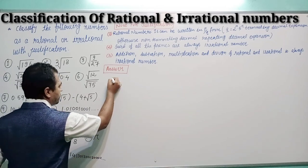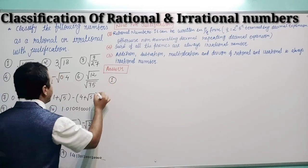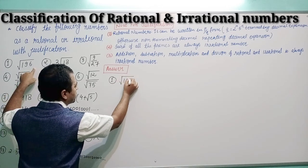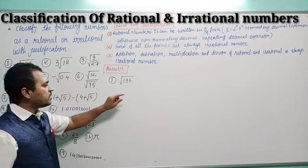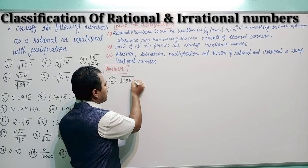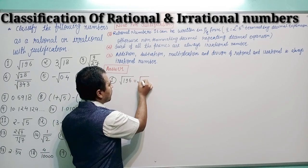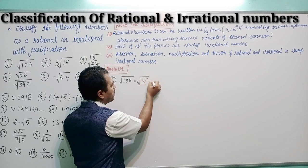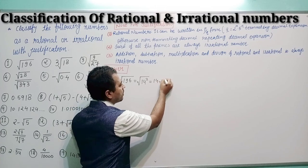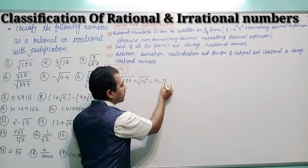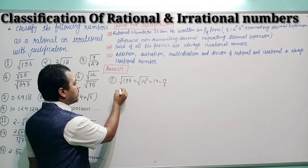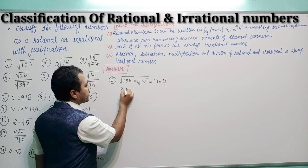First question: √196. Root of 196 can be written as 14², which equals 14. So 14 can be written as 14/1. This means the number can be written in p/q form, so this number is a rational number.